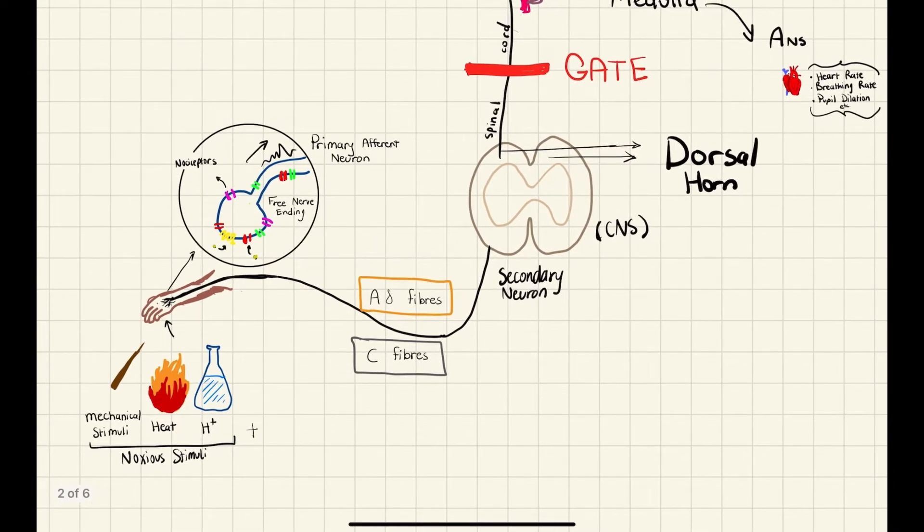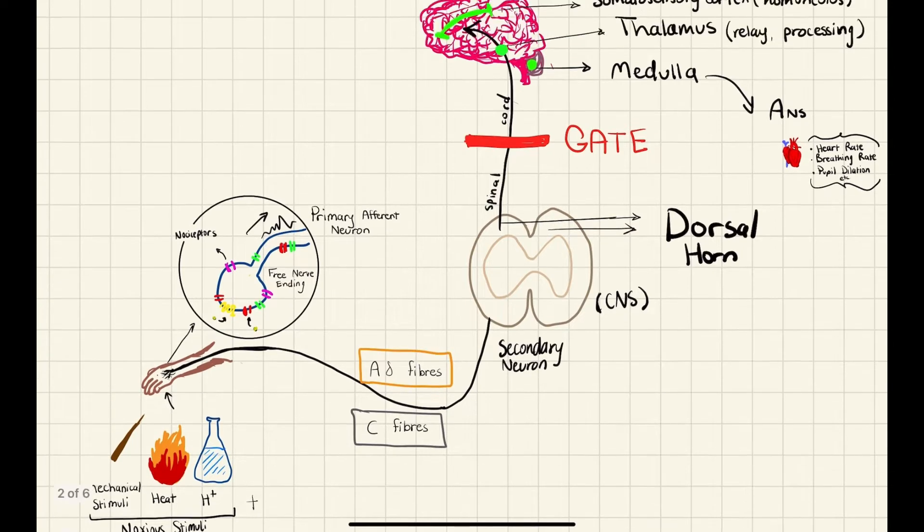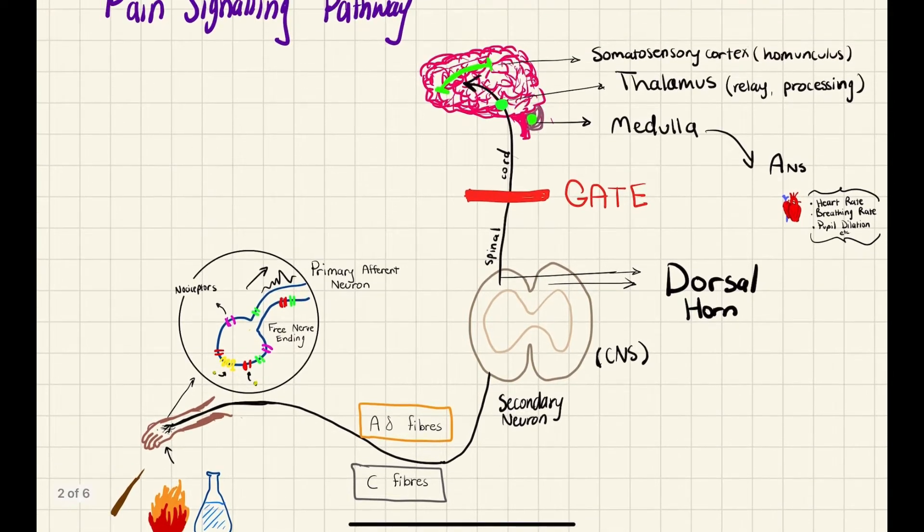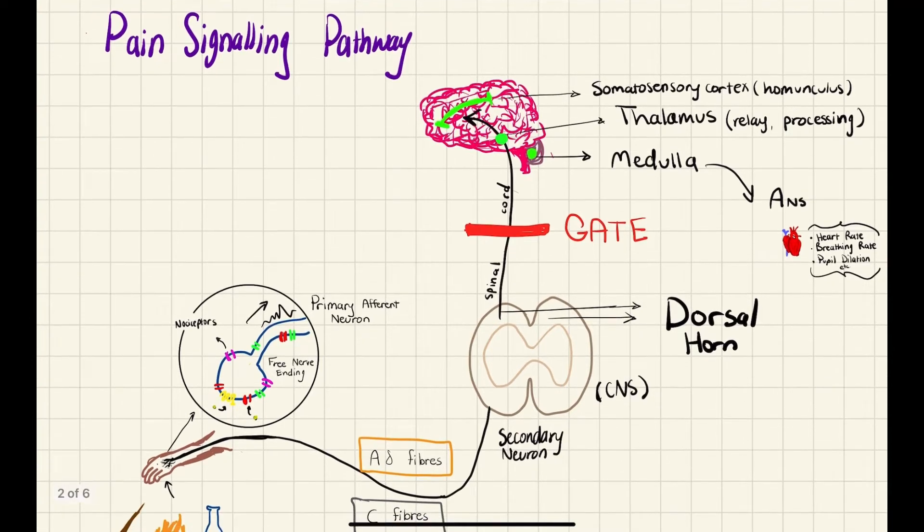Now, there's multiple different fibers that bring it down. There are C fibers, which are unmyelinated, so they might cause slow throbbing pain, some hypothesize. Or you might have A delta fibers, which are myelinated, and it just allows a faster conduction. So it may be a sharp pain. It then enters from the periphery into the central nervous system, and it travels through the dorsal horn, which is the back end of the vertebra, into your spinal cord. This is where incoming signals come in, and then it travels up the spinal cord, and where it reaches a gate.